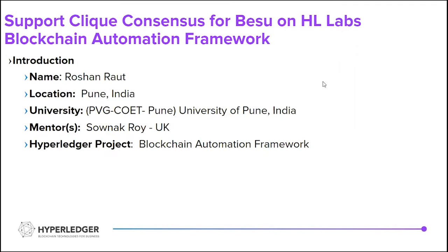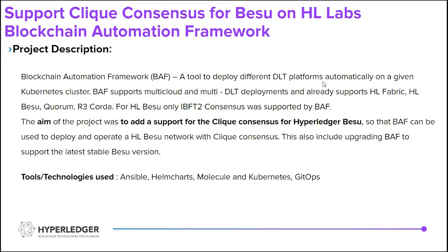A bit of description about my project. Blockchain Automation Framework is a tool to deploy different distributed ledger technology platforms automatically on any given Kubernetes cluster. BAF supports multi-cloud and multi-DLT deployments and already has support for Hyperledger Fabric, Hyperledger Besu, Quorum,